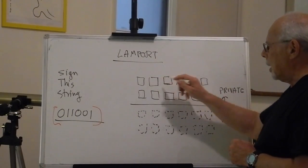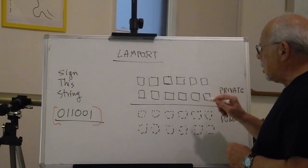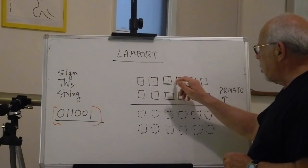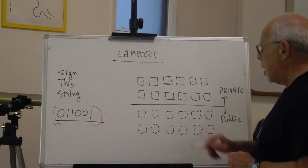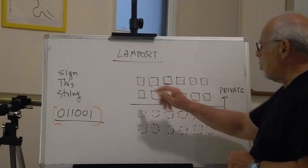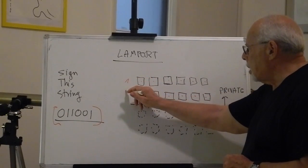Alice will select, let's say, six random numbers represented by these squares, and another set of six random numbers. We call it the first set and the second set.